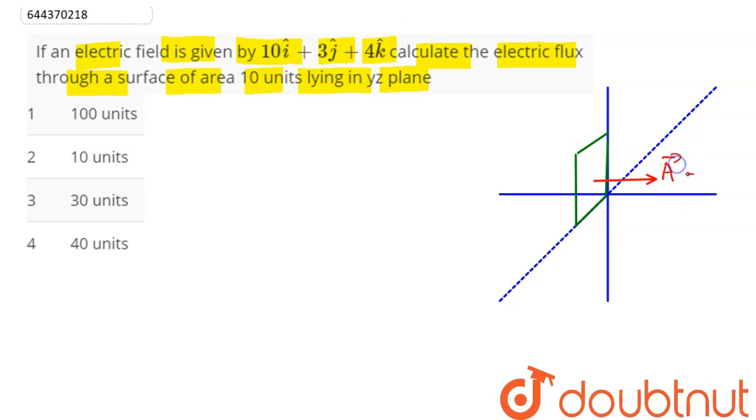So area vector here is 10 units in the x-axis, that is i cap. Electric field here is given as shown.